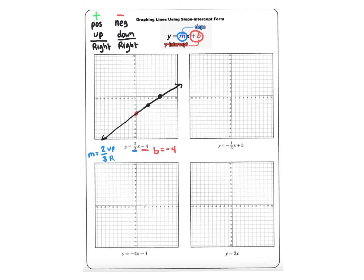Let's look at the next example. The slope is negative, so I'm going to go down one first and right three. I'm going to start at a positive five — the y-intercept. So I start here at positive five, and from that point I go down one and right three, and then down one and right three again. And from there I draw my line.